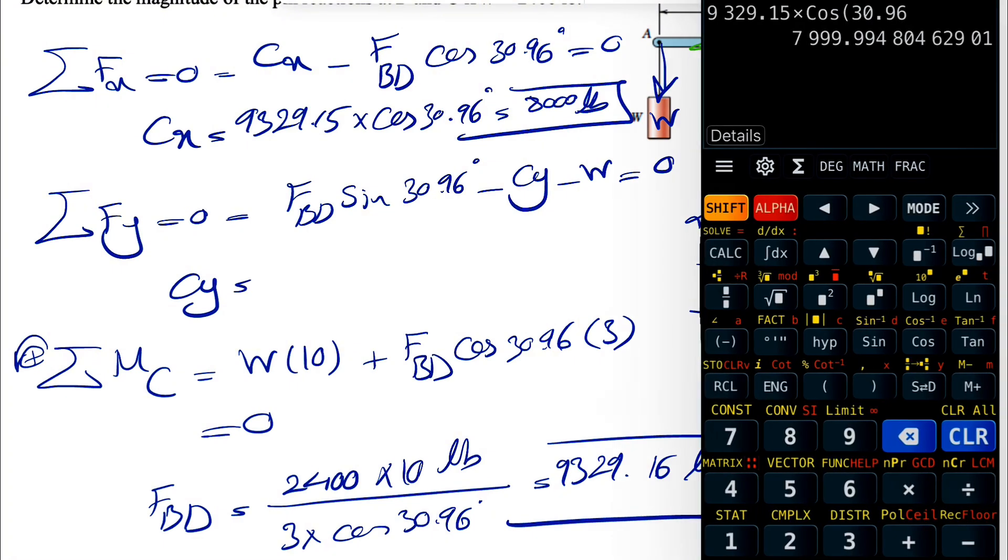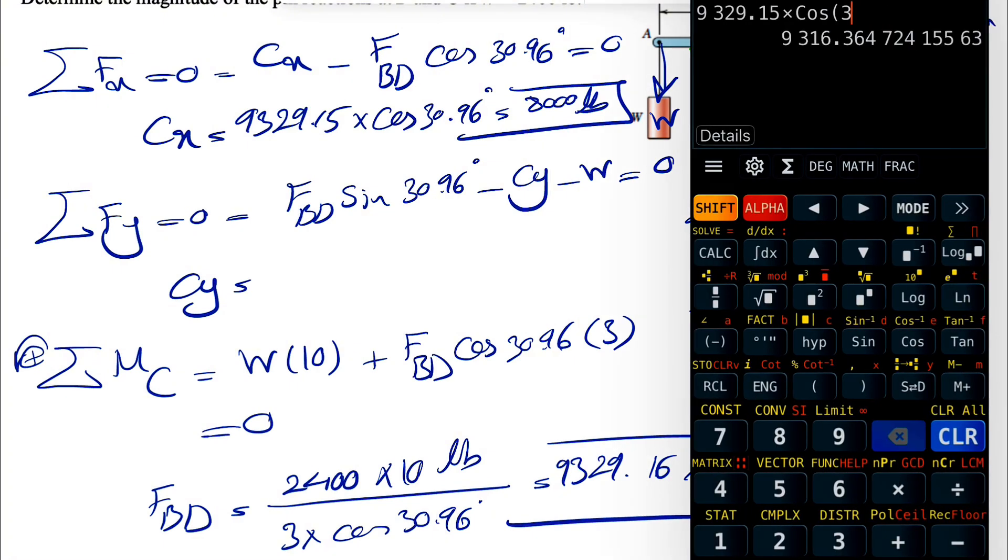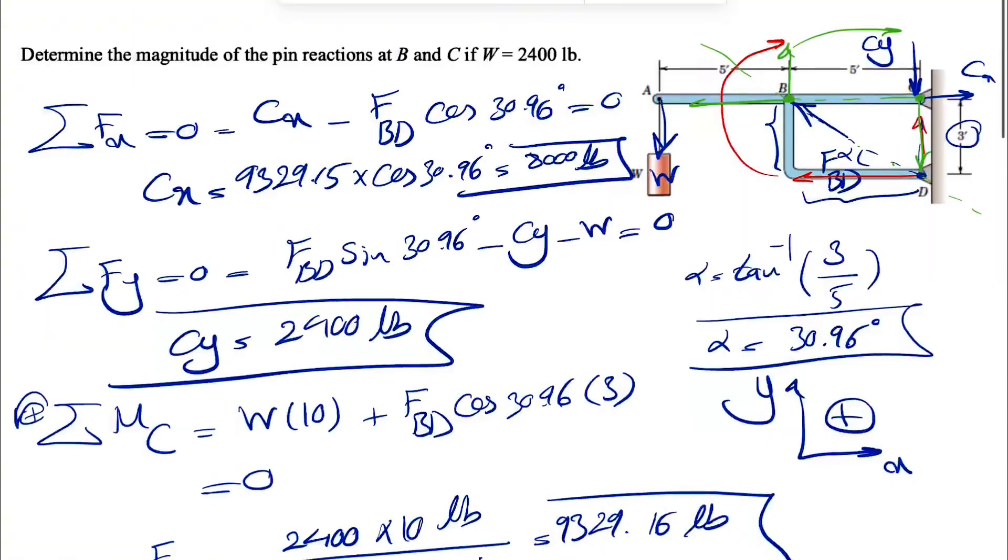And our CY would be FBD sine of 30.96 minus the weight, which was 2,400. And that's going to give us 2,400 pounds for the CY.